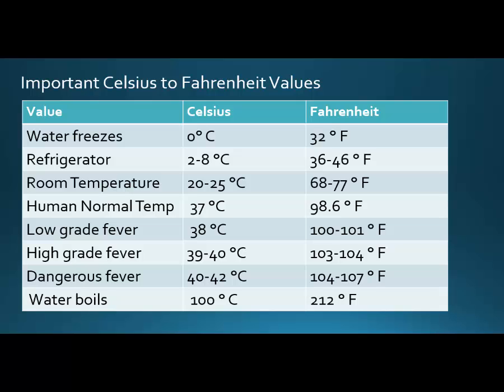Room temperature is 20 to 25 degrees Celsius. A lot of times you'll see 25 as the number because you want the upper end, but that's about room temperature. Normal human temperature is 37 Celsius and 98.6 Fahrenheit — that's oral temperature; rectal temperature would be a bit higher.